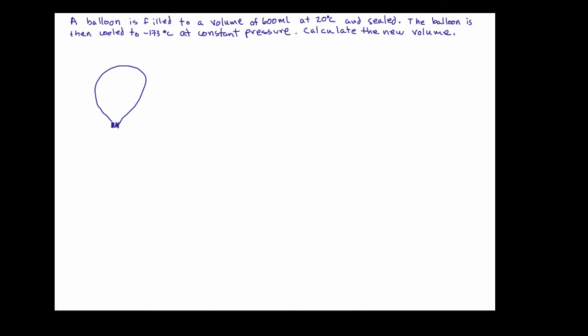Now, the fact that we sealed the balloon means that we have trapped a certain number of particles within this container, and more than likely the moles are going to remain constant as we go through this problem. That's an important piece of information. Our initial volume V1 is equal to 600 milliliters, and the initial temperature T1 is 20 degrees centigrade or Celsius.